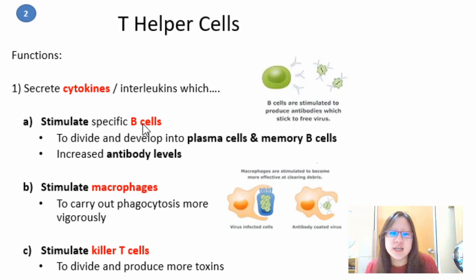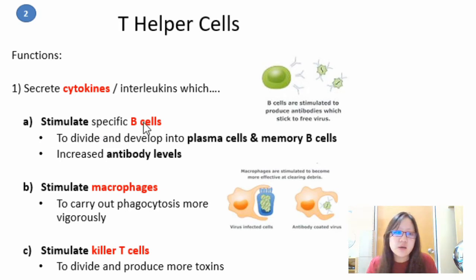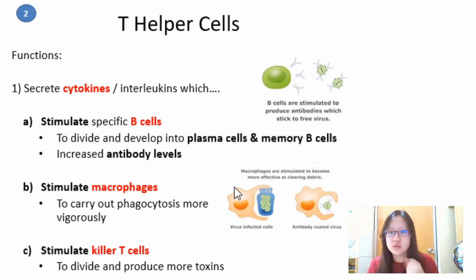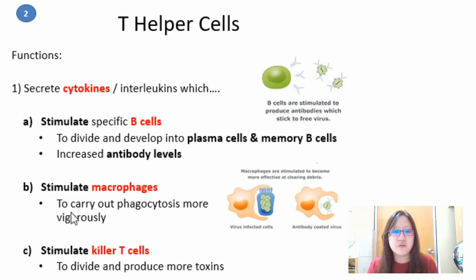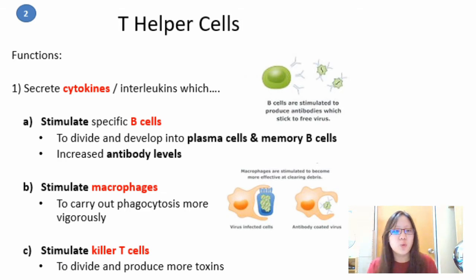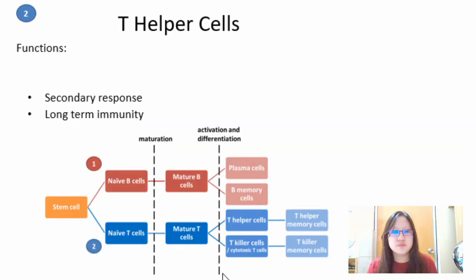Cytokines stimulate each of these cell types to become more vigorous. B cells that are stimulated divide and develop into plasma cells and memory B cells, resulting in increased antibody levels. Stimulated macrophages carry out phagocytosis more vigorously — faster and more frequently. Stimulated killer T cells divide and produce more toxins.